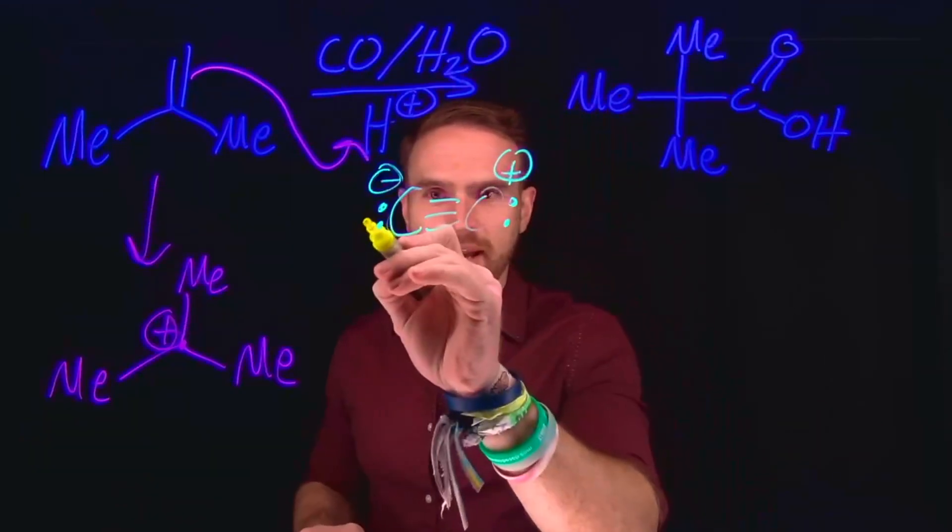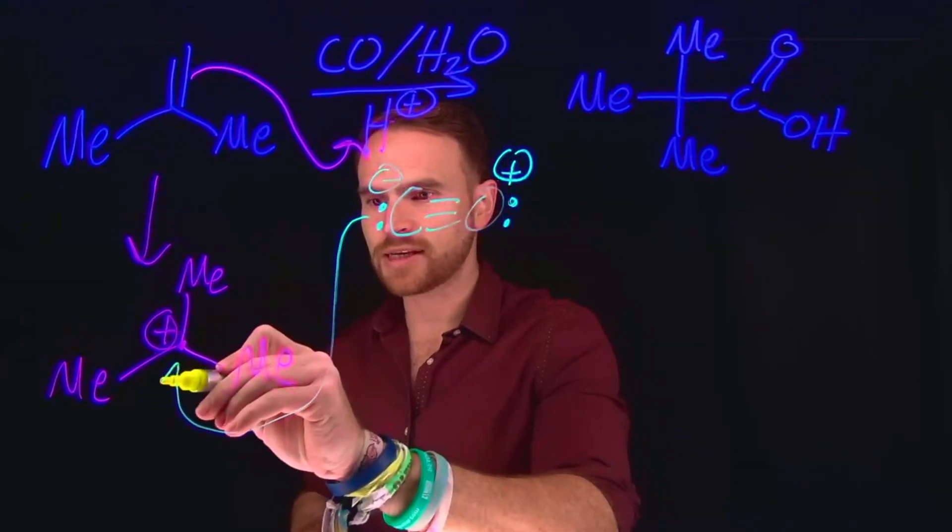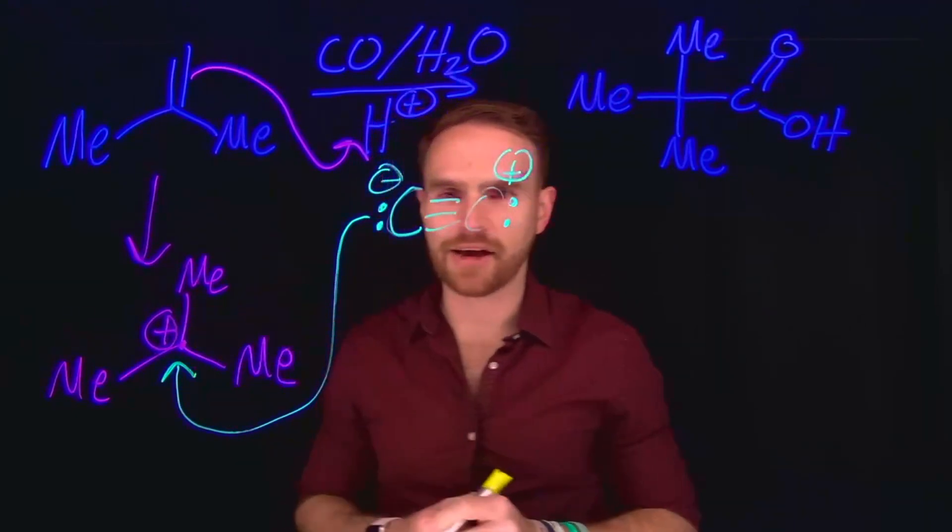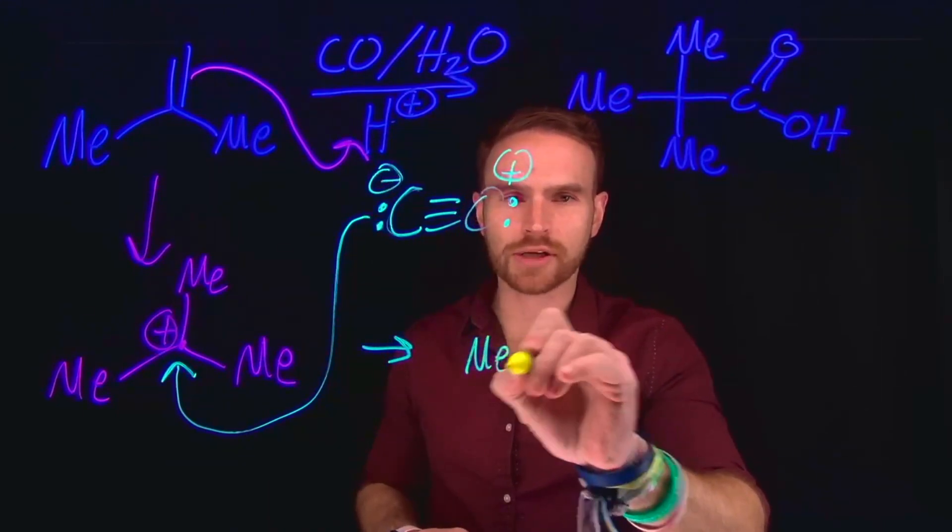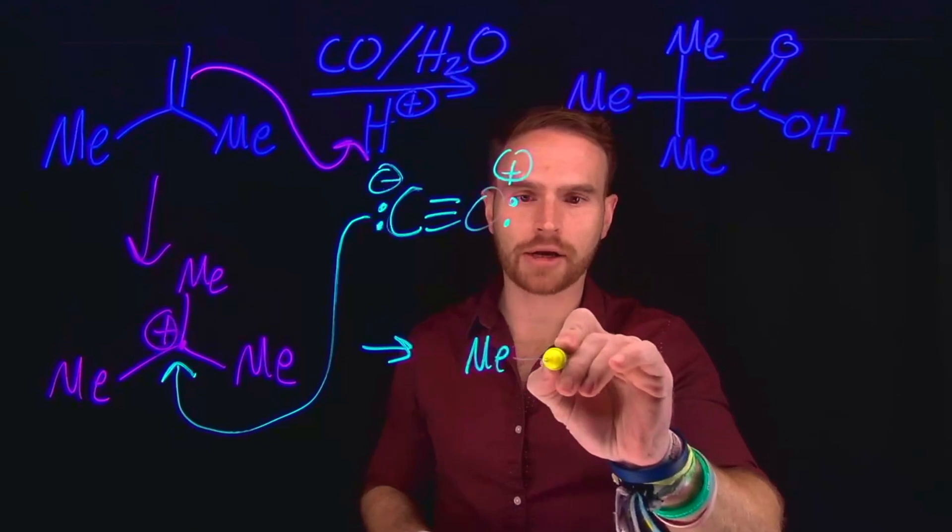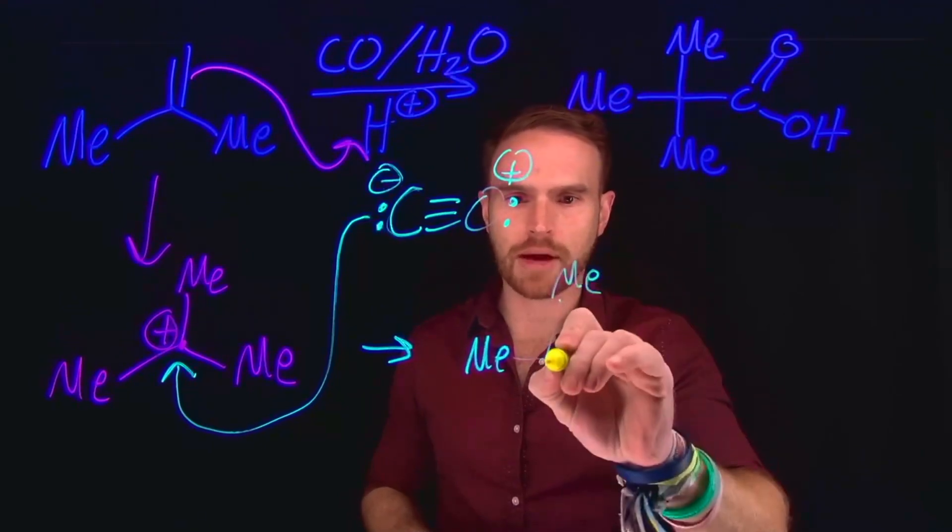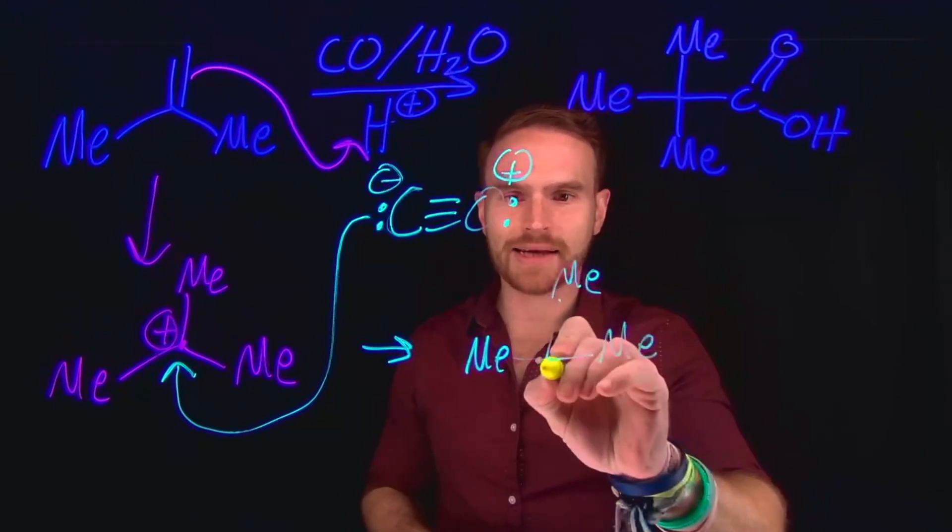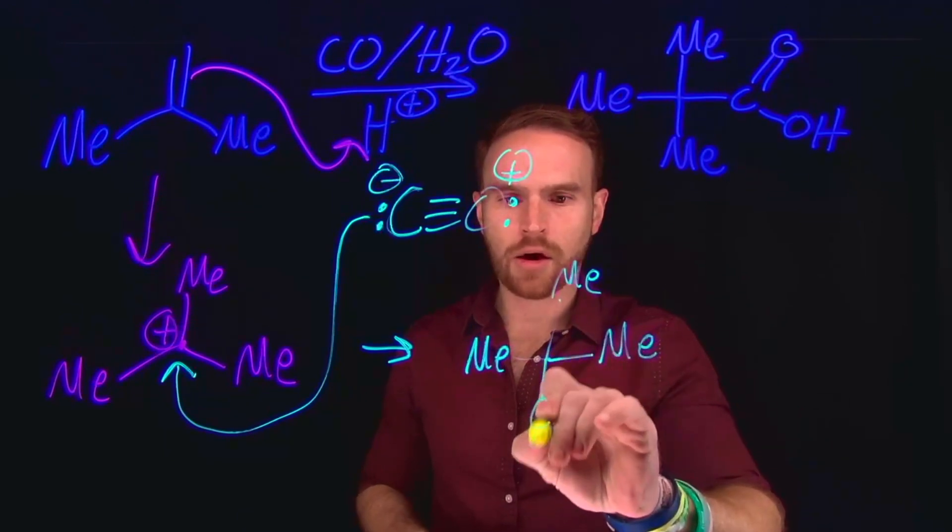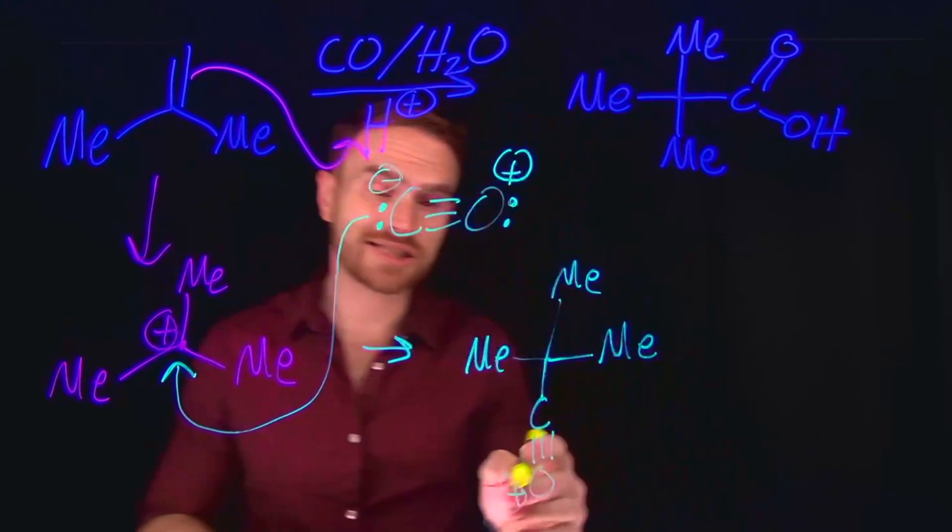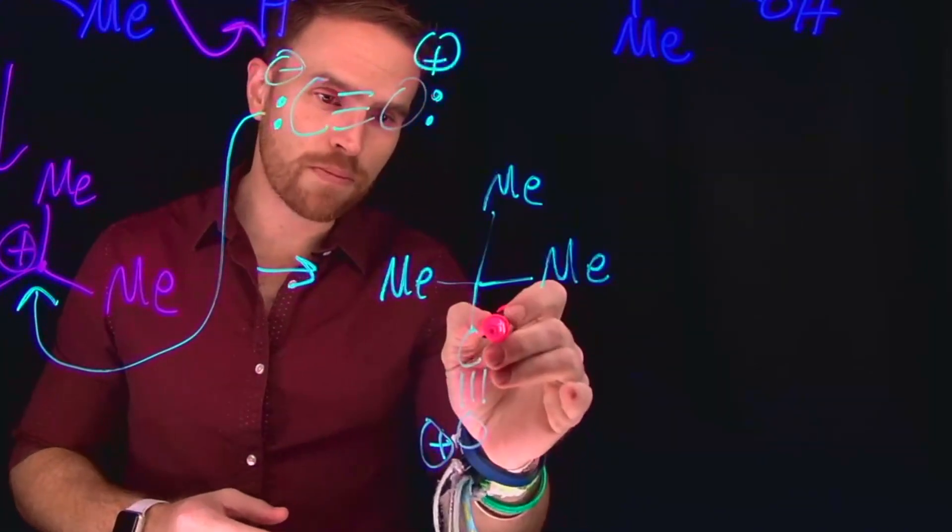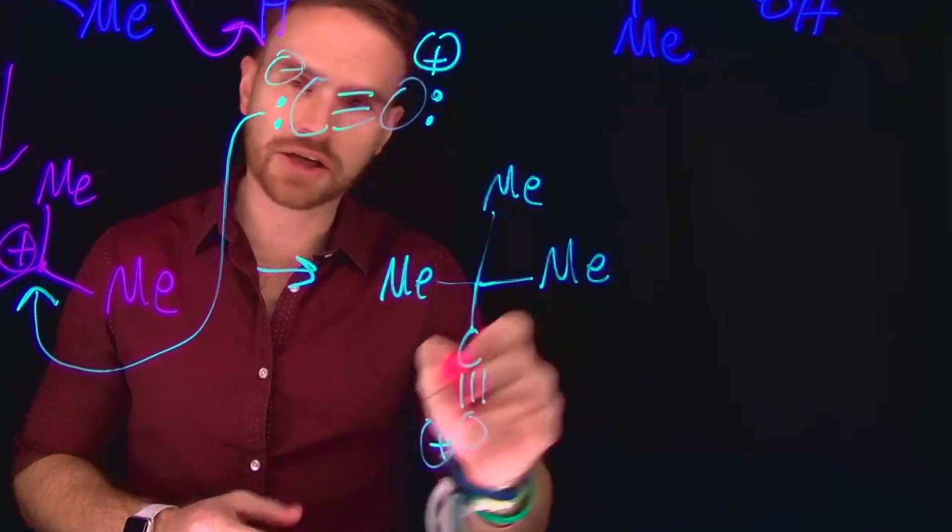So that's the step that happens next, where you would get the nucleophilic attack of this carbocation to generate a new quaternary carbon where now we're starting to generate most of our final product because now we have our three methyl groups as well as CO or carbon monoxide attached at this position where the oxygen is still positive. And this oxygen being positive turbo charges the attack of this carbon.